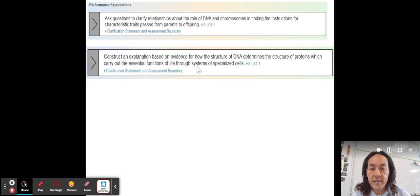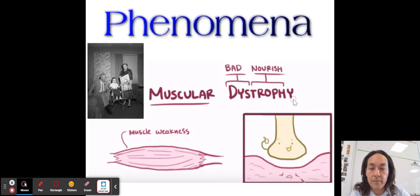Here are our NGSS standards. They're pretty cool. Ask questions to clarify relationships about the role of DNA in chromosomes, including for the instructions for characteristic traits passed from parents to offspring. So I want you to come up with good questions that we can test on that. And then construct an explanation based on evidence for how the structure of DNA determines the structure of proteins, which carry out the essential functions of life through systems of specialized cells, so protein synthesis.